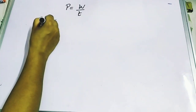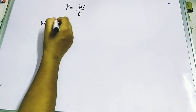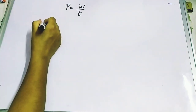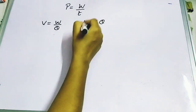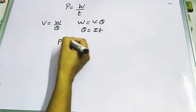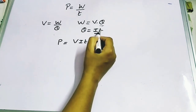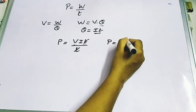Now let's derive the formulas for electric power. Power is defined as work done per unit time. From the relation V = W/Q, we get W = V × Q. Since Q = I × t, we have W = V × I × t. Therefore, P = W/t = VIt/t, and t cancels out, giving us the first formula: P = VI.